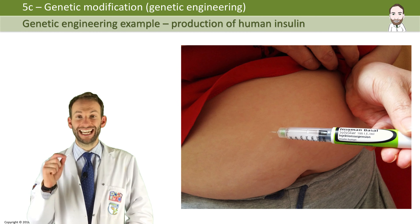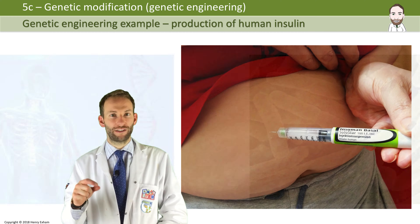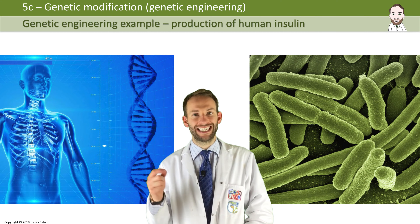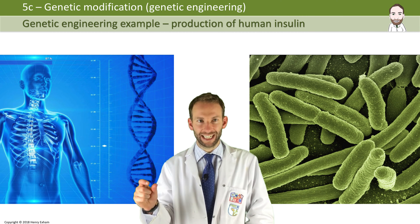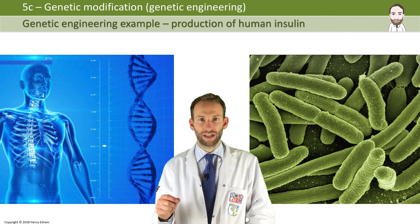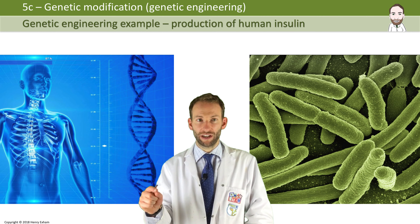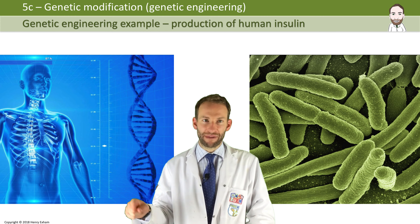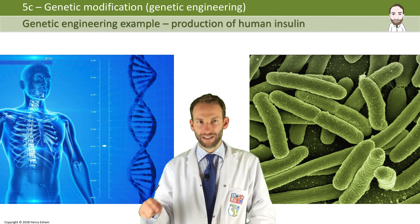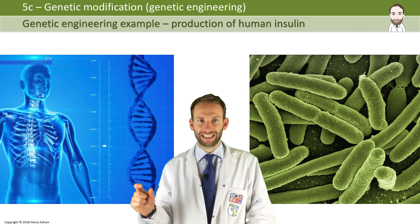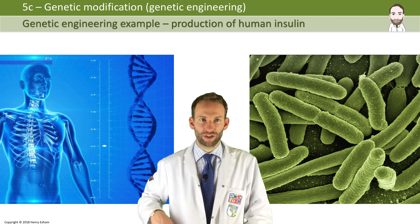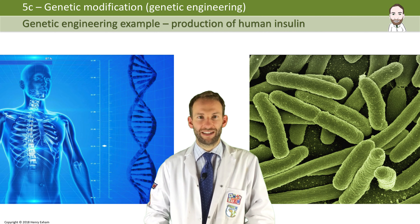The answer is to get the gene that makes human insulin from a person's DNA, cut it out, and stick it into a bacteria. The bacteria will read that gene as if it's one of its own and manufacture the protein insulin as if it was one of its own proteins. So you're basically using this bacteria a bit like a slave to produce human insulin.